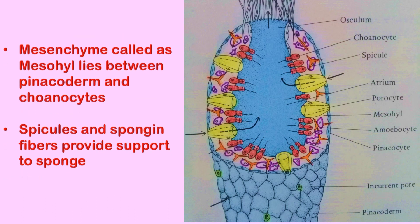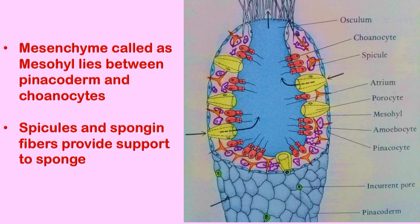Between the pinacoderm and choanocyte layer lies a layer of gel-like material called the mesohyl. The mesohyl contains amoebocytes of different types, and it also contains spicules and spongin fibers embedded in it. These spicules and spongin fibers provide support to the sponge, as they form the basic skeletal framework.